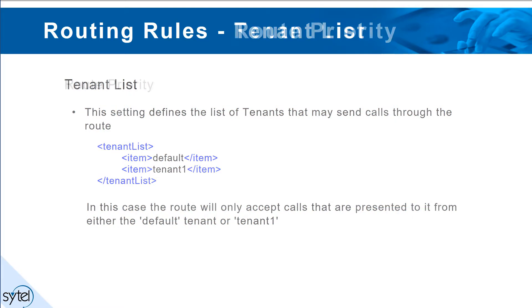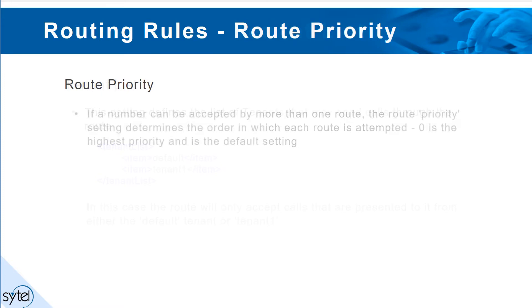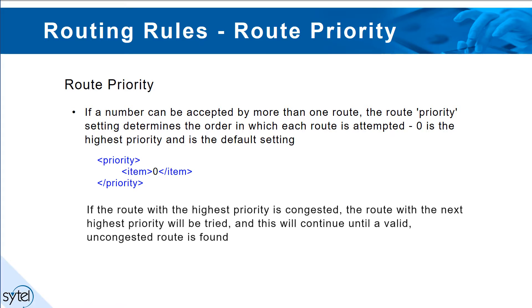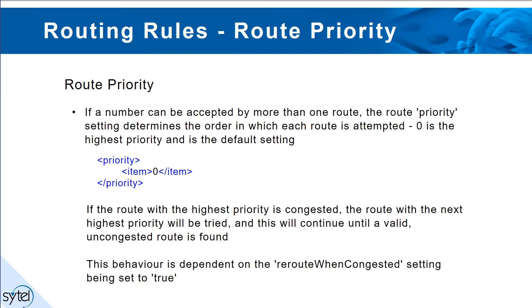Route priority: if a number can be accepted by more than one route, this setting determines the order in which each is attempted. Zero is the highest priority and is the default setting. If the route with the highest priority is congested, the route with the next highest priority will be tried, and this will continue until a valid uncongested route is found.